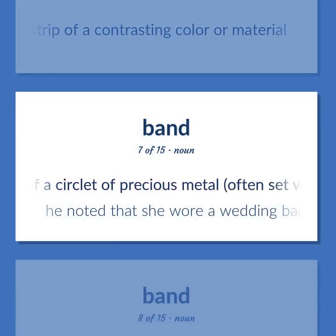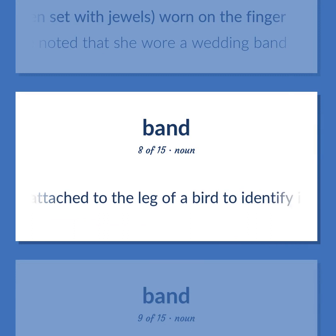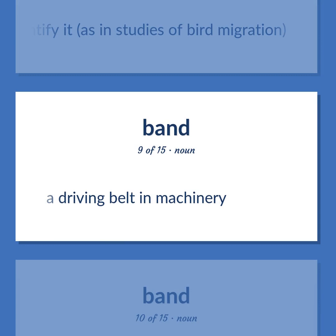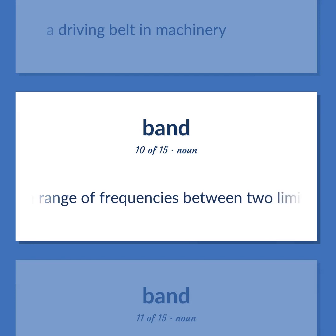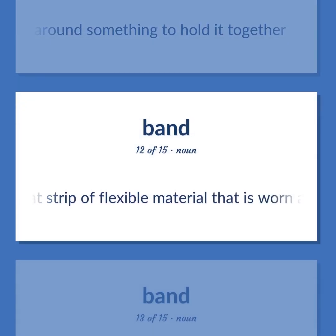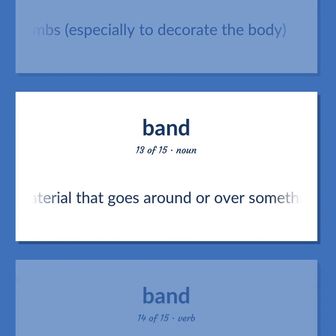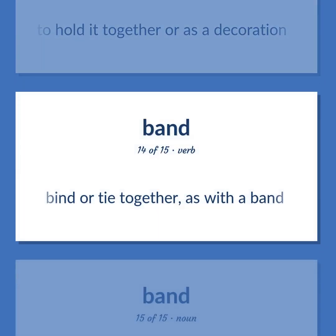Band: An adornment consisting of a strip of a contrasting color or material. Jewelry consisting of a circlet of precious metal, often set with jewels, worn on the finger — he noted that she wore a wedding band. A strip of material attached to the leg of a bird to identify it, as in studies of bird migration. A driving belt in machinery. A range of frequencies between two limits. A restraint put around something to hold it together. A thin flat strip of flexible material worn around the body or one of the limbs, especially to decorate the body. Bind or tie together, as with a band.